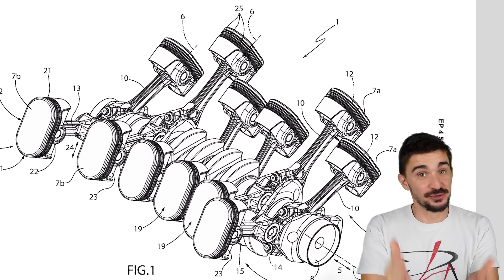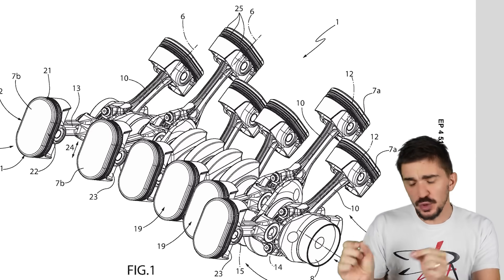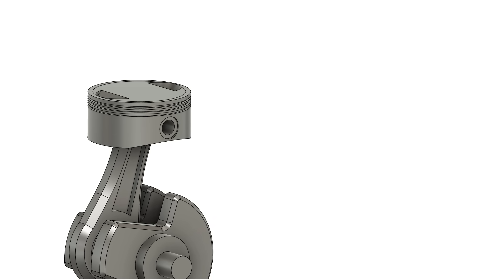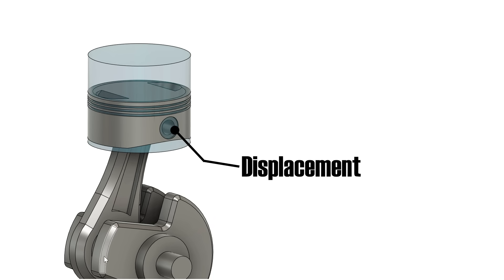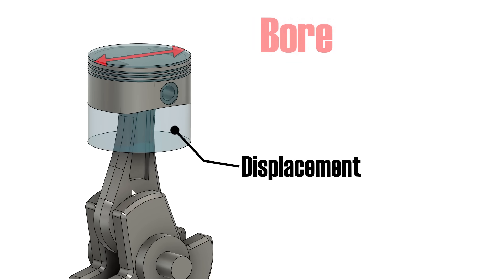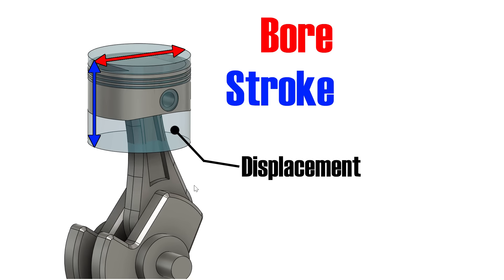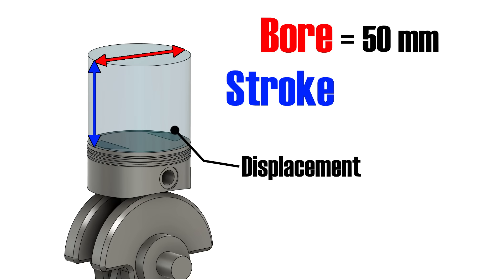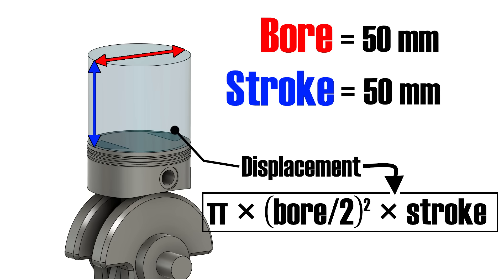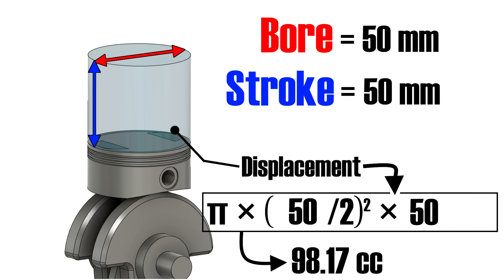Allow me to explain the real reason behind Ferrari's super interesting new design. Let's observe a traditional round piston and cylinder. The displacement of this simple anatomy is defined by the bore and the stroke. Let's say that our bore is 50 millimeters and our stroke is also 50 millimeters.